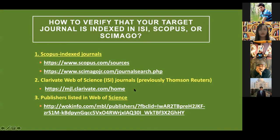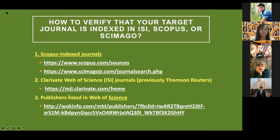I also had a book chapter published with a publisher indexed in Web of Science. When the book editor invited me, he told me the book would be published with a Web of Science-indexed publisher. To verify, I used the Web of Science publisher list. The book was 'Knowledge Mobilization in TESOL: Connecting Research and Practice.' I found the publisher's name in the list — yes, it is in Web of Science. That's why I sent my chapter to the editors. Those are the links to use to verify index claims on journal websites.